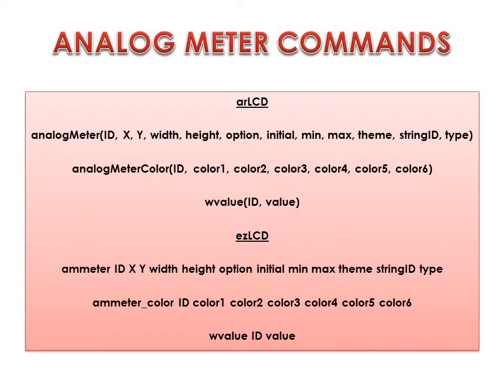Here are the commands to create the analog meter and alter it. First, we have the analog meter, which will create our widget. Analog meter color will change the color of the tick marks and numbers. And wValue will allow us to set the current value of the analog meter.